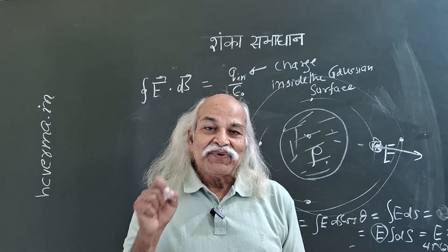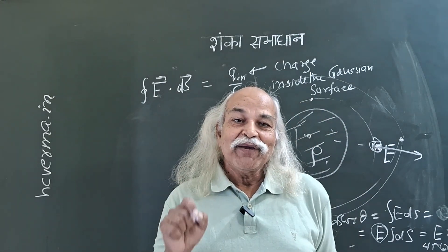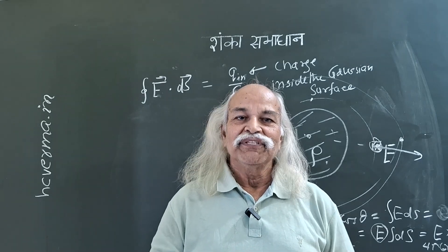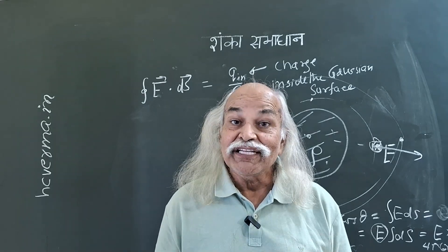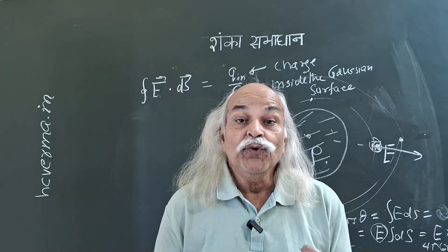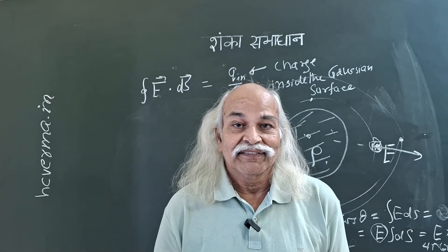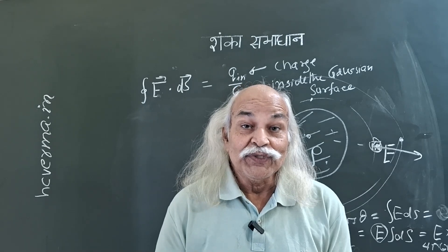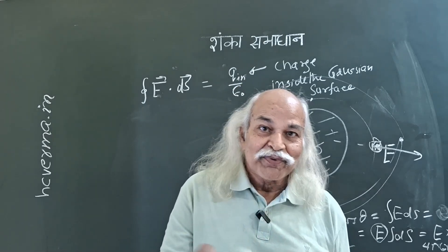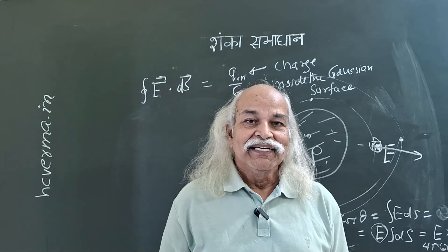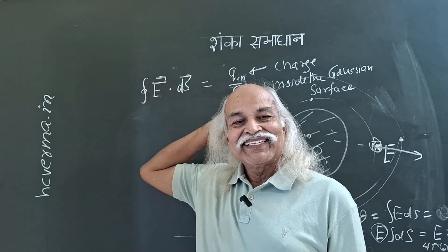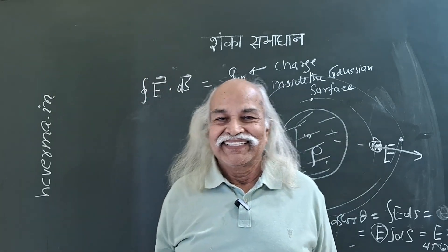You get point-by-point electric field only if there is symmetry in the charge distribution and you use that symmetry. Then you can get the point-by-point electric field. Otherwise, Gauss's law is valid in all conditions.